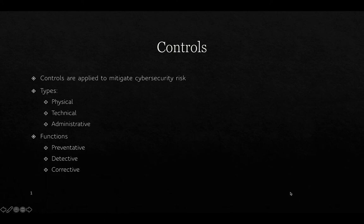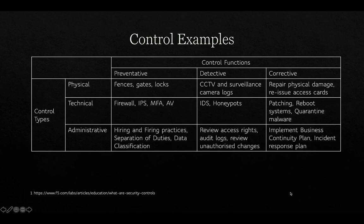Controls also have three functions: preventative, detective, and corrective. A physical preventative control can be something like a fence, gate, or lock — for example, locks on a machine room door to prevent unauthorized access. A physical detective control might be CCTV and camera logs, while a corrective physical control would be repairing a damaged lock or reissuing an access card. Technical controls — the realm of cybersecurity — include firewalls, intrusion protection systems, multi-factor authentication, and antivirus software.